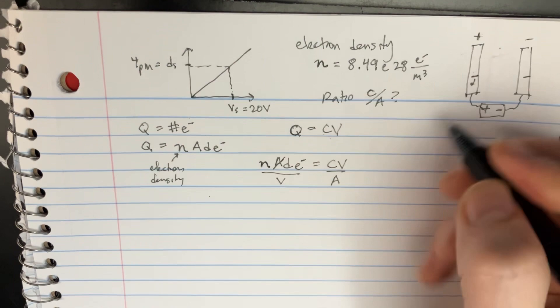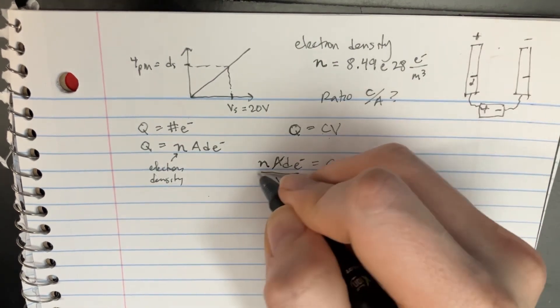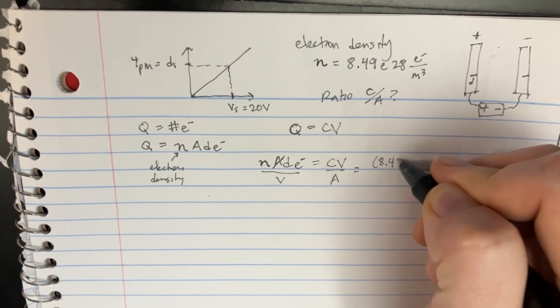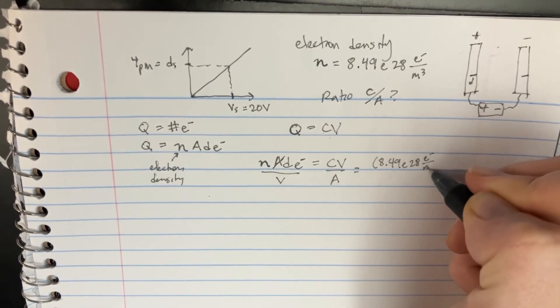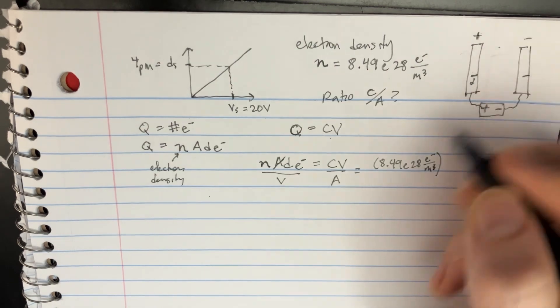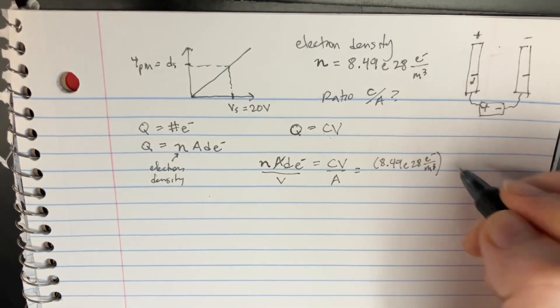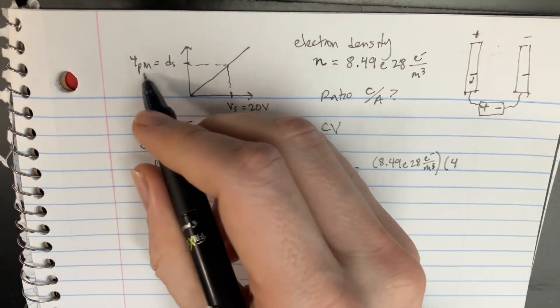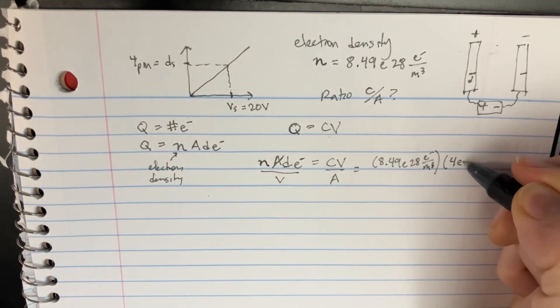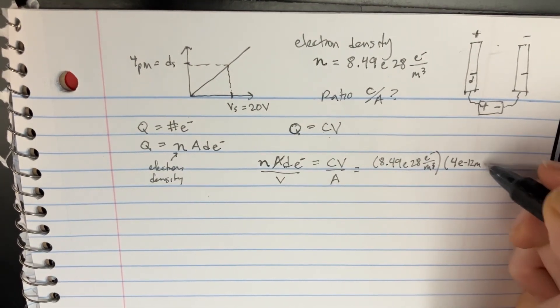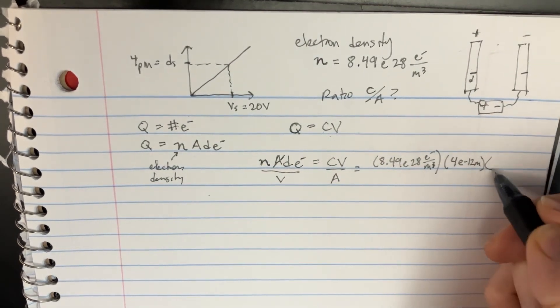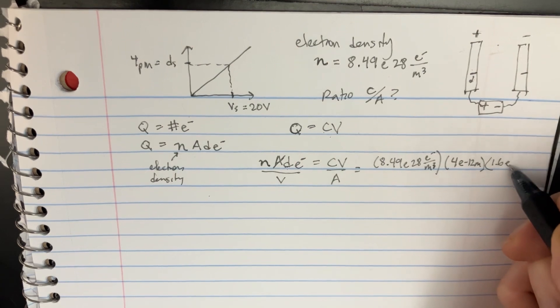And then all we need to do is solve for the density which was going to be this 8.49828 electrons over meters cubed. Then we have the depth over here which was supposed to be 4 picometers, which is e to the negative 12 meters. And then we have the electron charge which is 1.6 e to the negative 19.